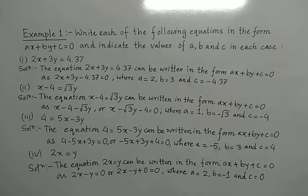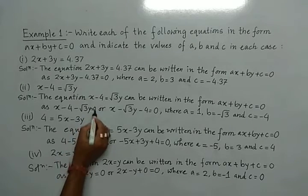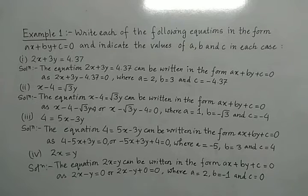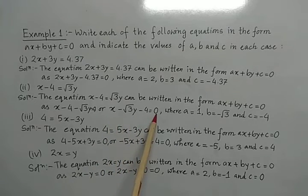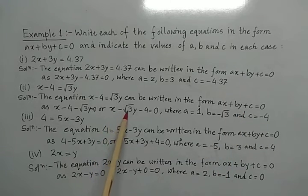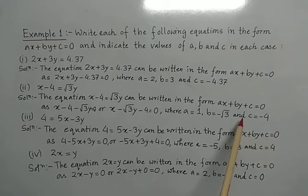One thing is missing here — the constant term. After reshuffling, we get the equation in ax plus by plus c form, that is x minus root 3y minus 4 equals to 0. So a equals to 1, b equals to minus root 3, and c equals to minus 4.